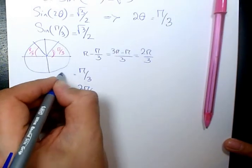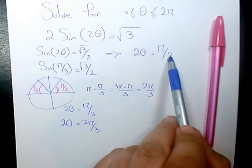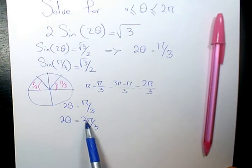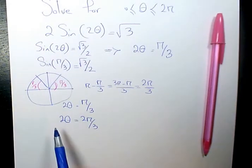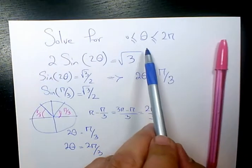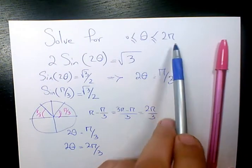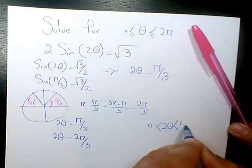And don't forget that we are talking about 2 theta now. Because here, 2 theta equals to pi over 3, and 2 theta equals to 2 pi over 3, based on what we have here. And since we are talking about theta between 0 and 2 pi, we can have 2 theta between 0 and 4 pi.